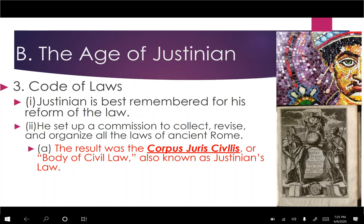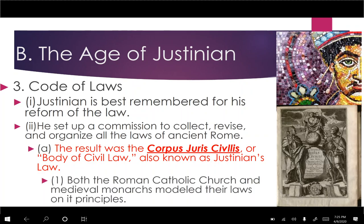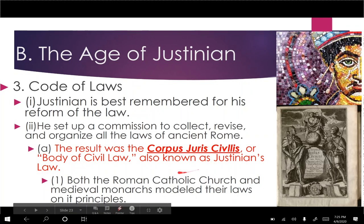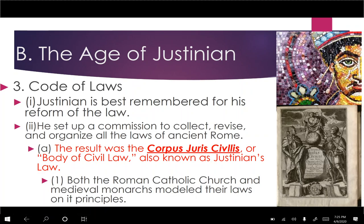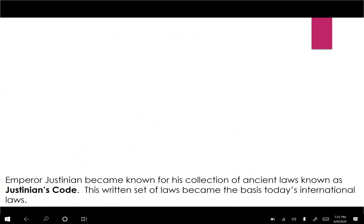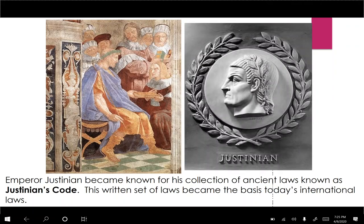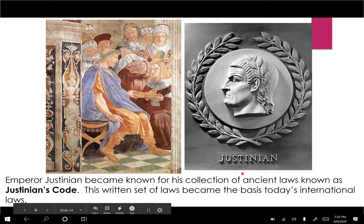Justinian's Corpus Juris Civilis was published throughout the empire. Both the Roman Catholic Church and medieval monarchs patterned their own laws after Justinian's code. Even today, international laws, the American Constitution, the Magna Carta, the Geneva Conventions, and other elements of international law can be traced back to the ideas Justinian created in the sixth century AD.